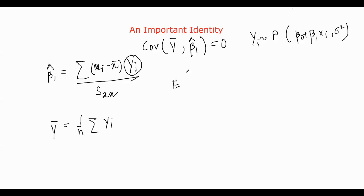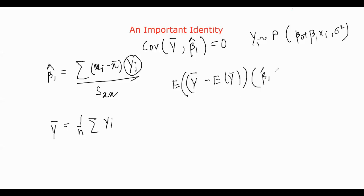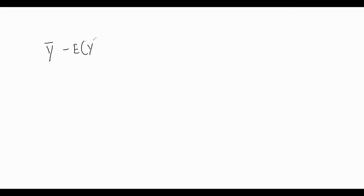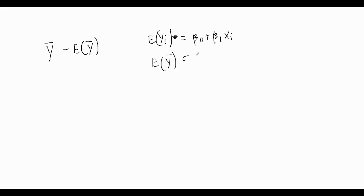It's expectation of y. Understand this very carefully — what we are doing. What is covariance of ȳ? Covariance of ȳ is actually (ȳ minus expectation of ȳ) times (β̂₁ minus expectation of β̂₁). So this is a bit of longer calculation; try to understand this very carefully. So this is a relationship over here, and we will do it step by step. So let's do ȳ minus expectation of ȳ. So yi follows some distribution, and expectation of yi is β₀ plus β₁xi.